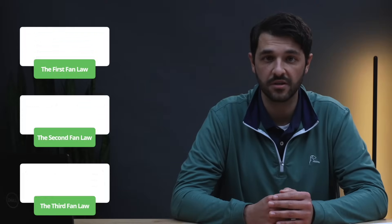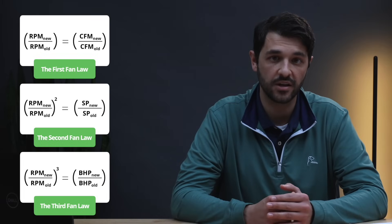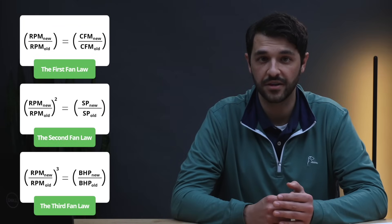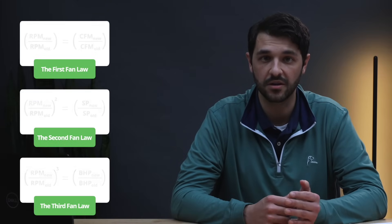To summarize these three fan laws: flow changes proportionately to speed; static pressure changes as a function of the change in speed squared; and brake horsepower changes as a function of the change in speed cubed. There are other fan laws, but these three fundamentals can help you quickly estimate the performance effects of changing speed, either during fan selection or making changes in the field. Thanks so much for watching. In the next video of our Fan Fundamentals mini-series, we'll be reviewing fan performance curves, so be sure to subscribe to our YouTube channel so you don't miss out on future topics.